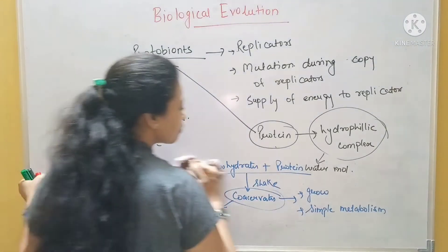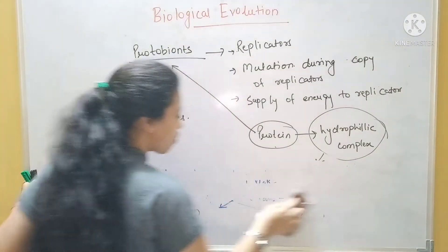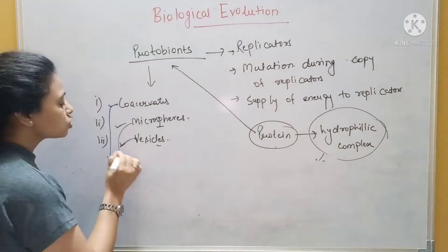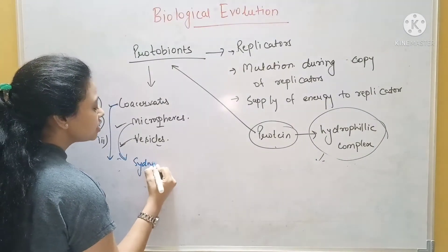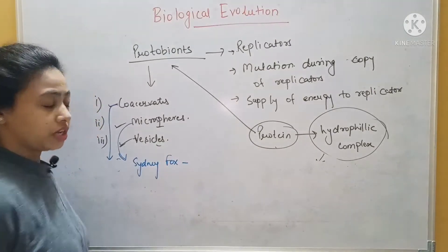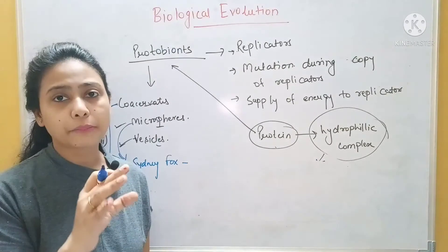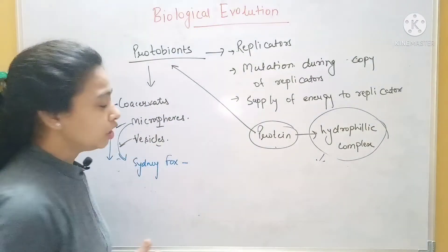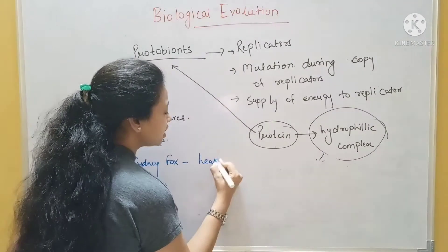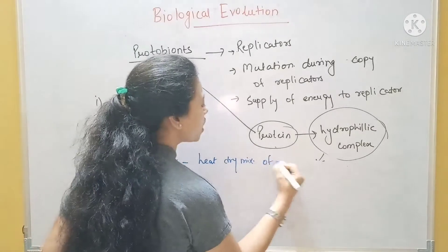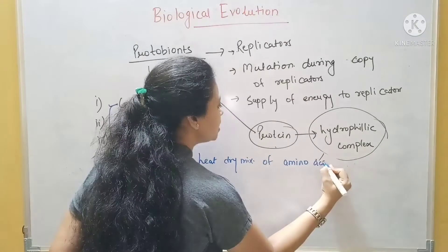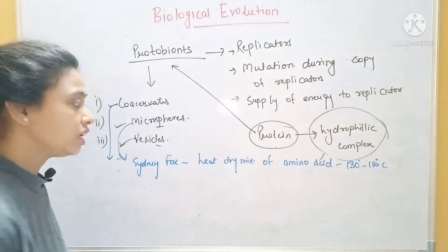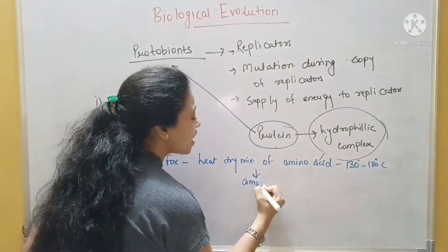The next scientist was Fox — Sydney Fox — who told us about microspheres. Microspheres had a lipid membrane — a primitive membrane. What did he do? He heated a dry mixture of amino acids at around 132 to 180 degrees Celsius. This made amino acid polymers. Then he poured this into cold water which also had some lipid present.